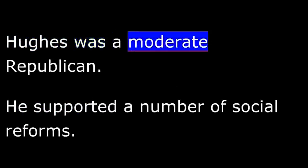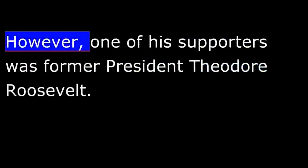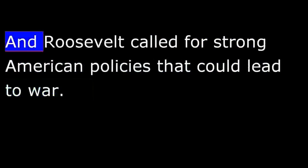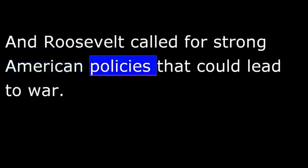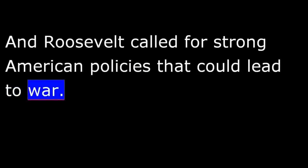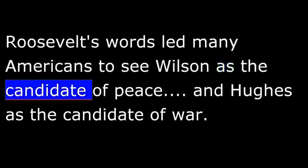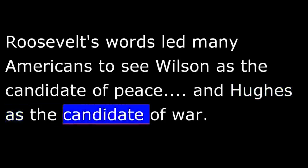The Republican Party nominated Supreme Court Justice Charles Evans Hughes as its candidate for president. Hughes was a moderate Republican who supported a number of social reforms. Like Wilson, Hughes promised to keep the United States neutral. However, one of his supporters was former President Theodore Roosevelt. Roosevelt called for strong American policies that could lead to war. Roosevelt's words led many Americans to see Wilson as the candidate of peace and Hughes as the candidate of war.